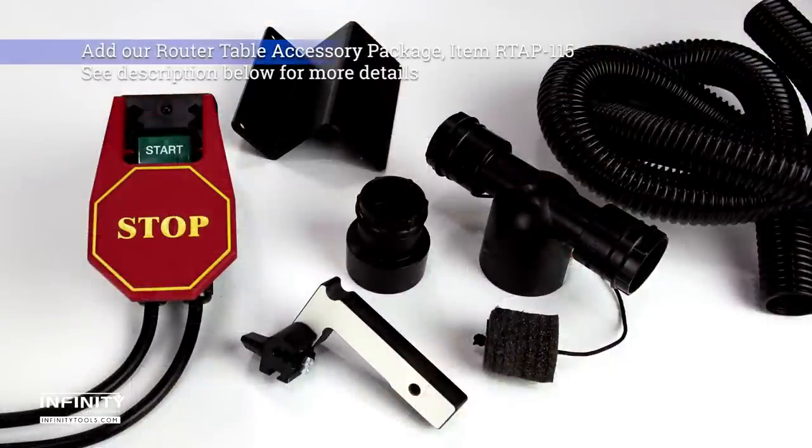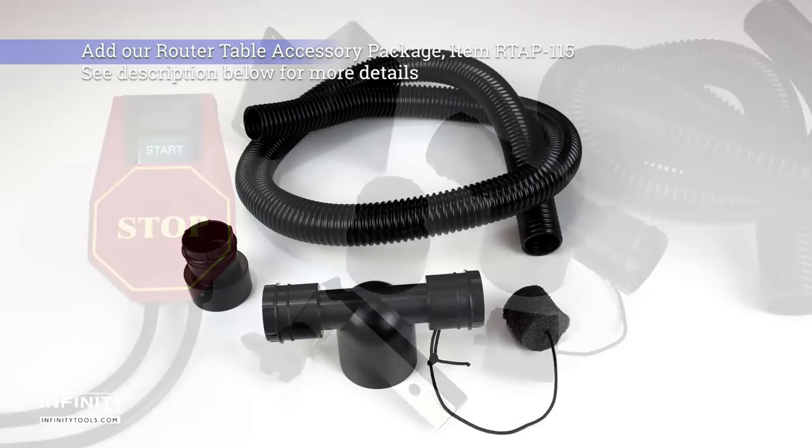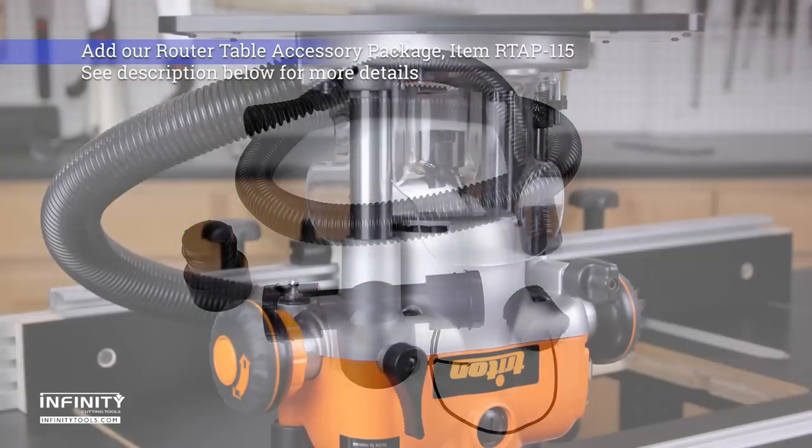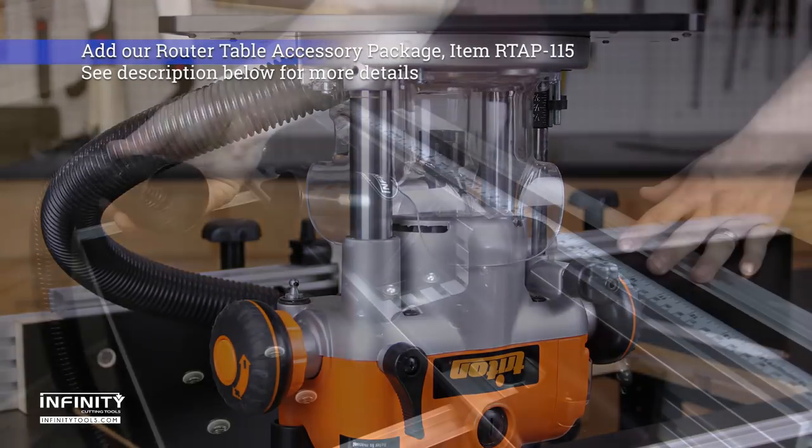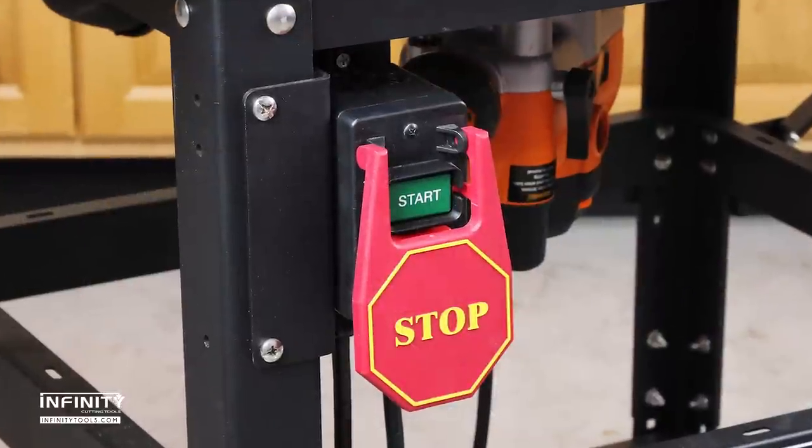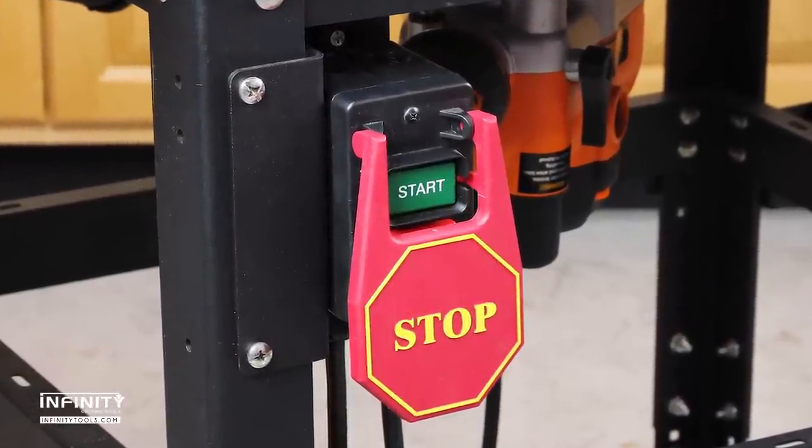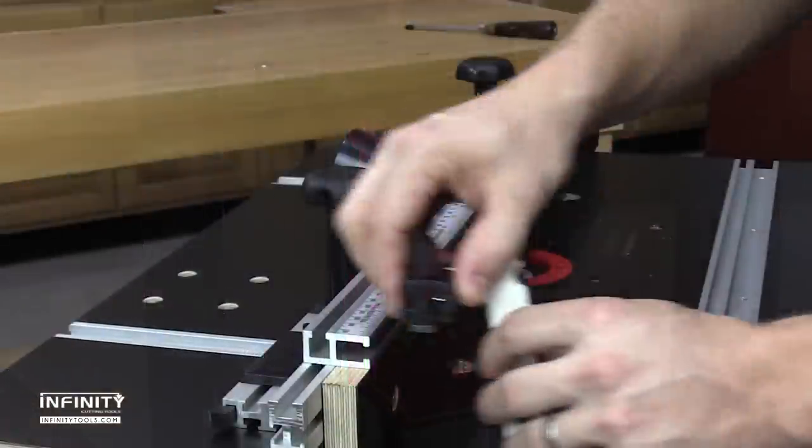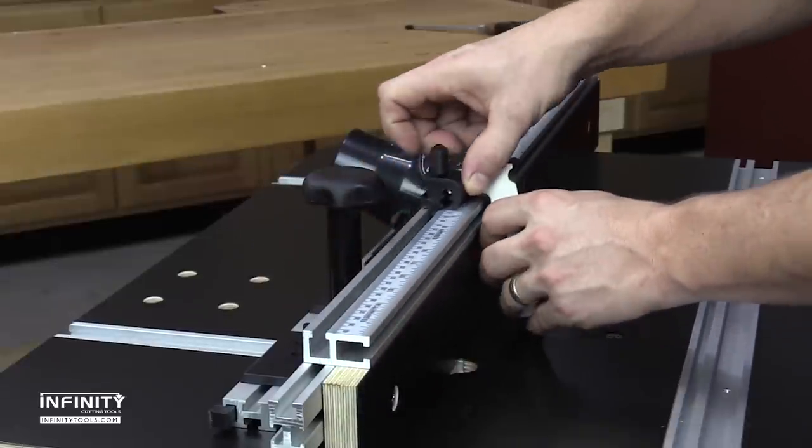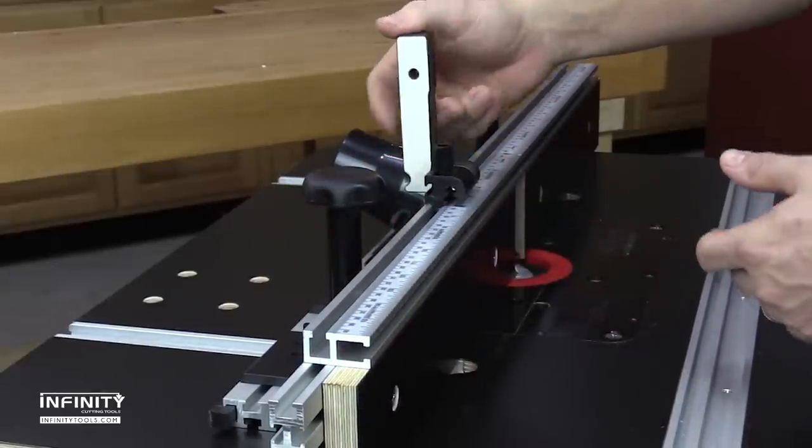Don't forget to add our router table accessory package. It includes a dust collection kit specifically designed for the Triton router to collect dust below the table and at the fence, a safety on-off switch with mounting bracket that mounts directly to the heavy-duty tool stand, and an Infinity Router Fence Flip Stop, perfect whenever you need to make repeat stopped cuts.